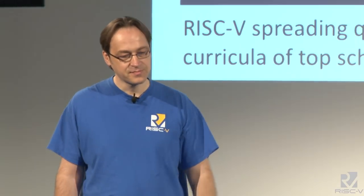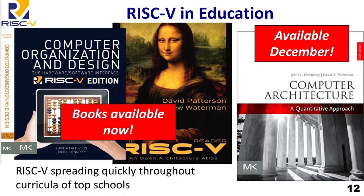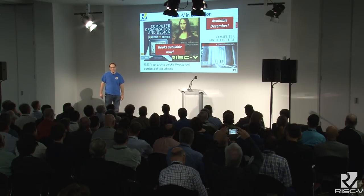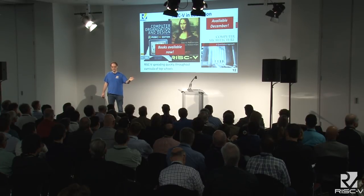In education, the top schools are developing curricula and teaching classes. At Berkeley, every level of student is learning RISC-V right now — I'm currently teaching 730 undergraduates about RISC-V in CS 61C with Randy Katz. The big news is that the most popular undergraduate textbook in computer architecture, Patterson and Hennessy's Computer Organization and Design, now has a RISC-V edition. There's also a reader from David Patterson and Andrew Waterman that's useful for practitioners coming from other ISAs.